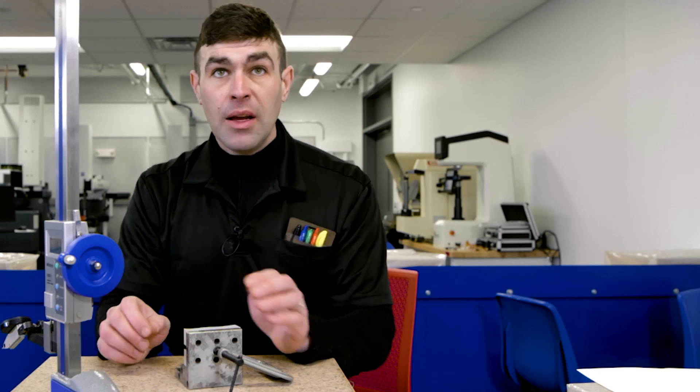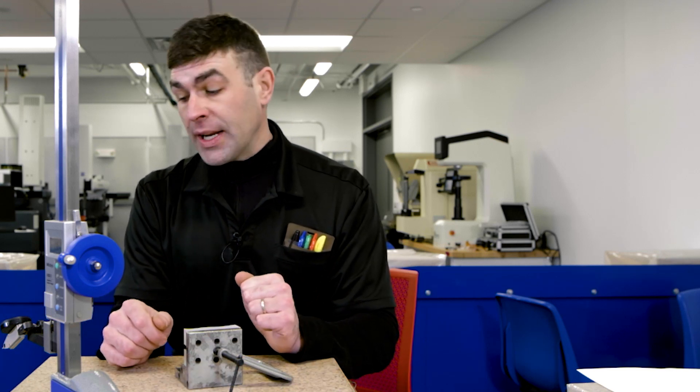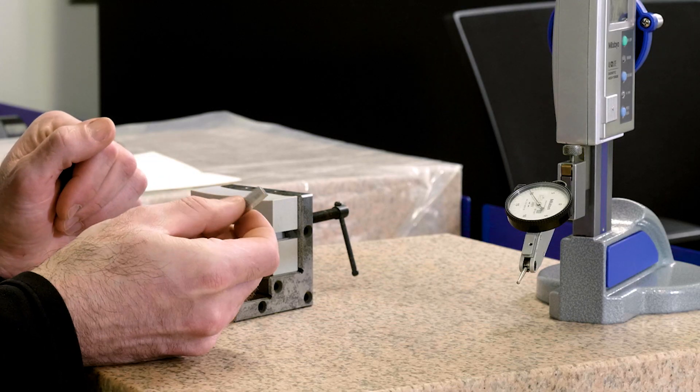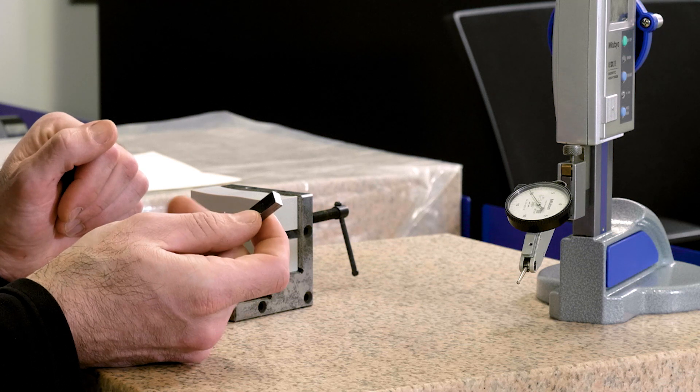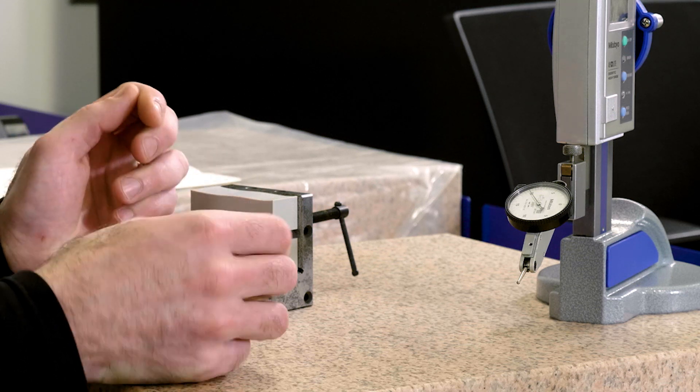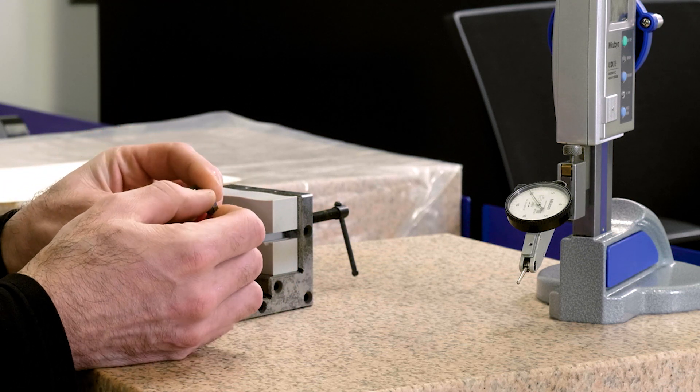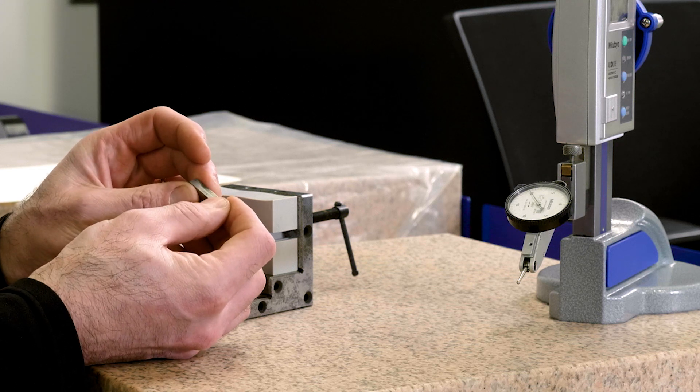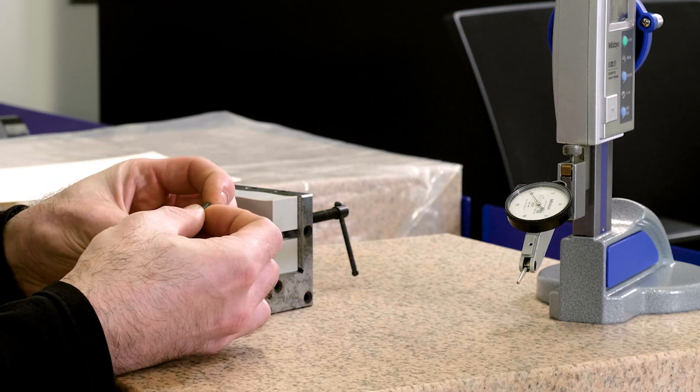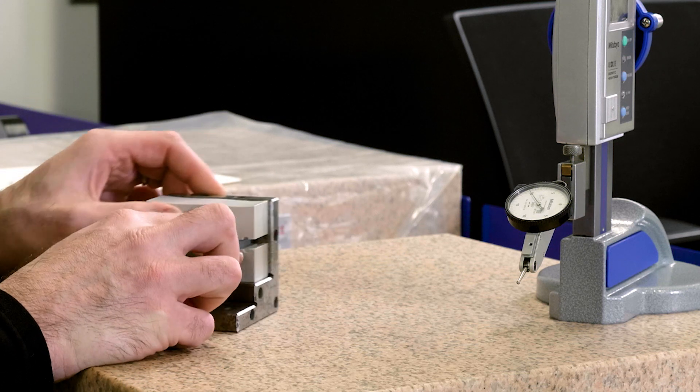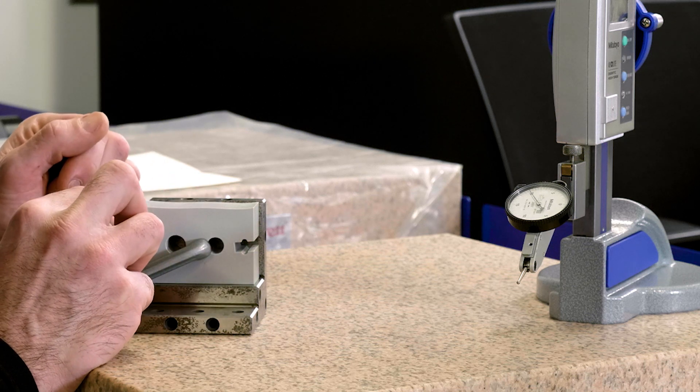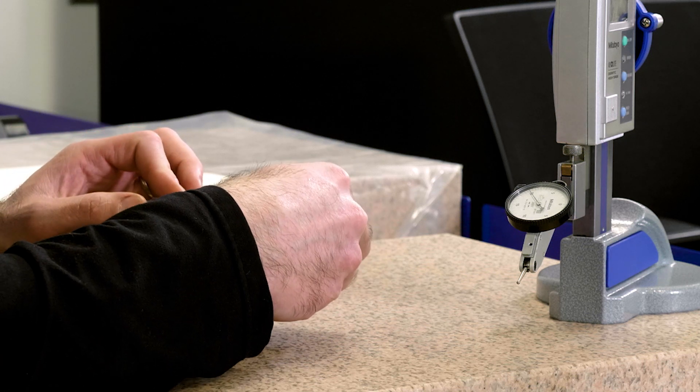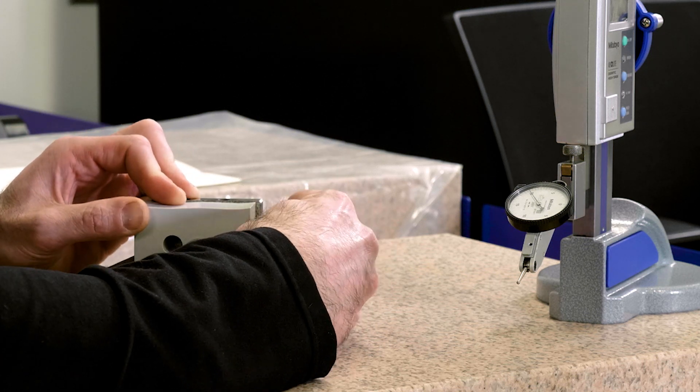So how are we going to find out where the center plane is? We're going to use two gauge blocks that have been rung together. So this is a 0.124 and a 0.123 gauge block. I already checked that's the maximum size that's going to fit into our feature here.